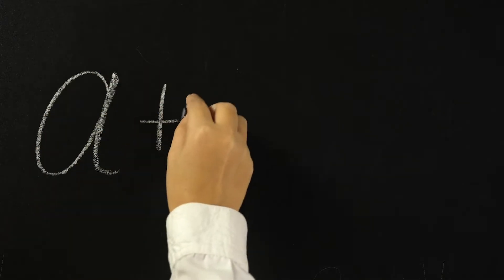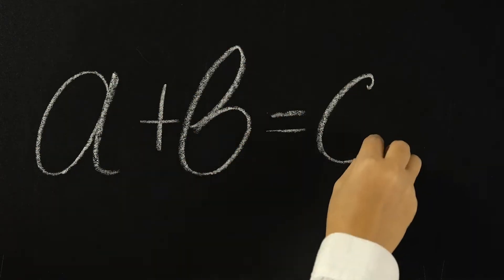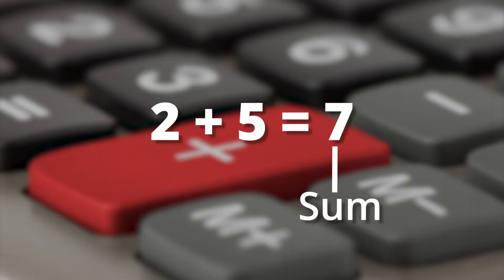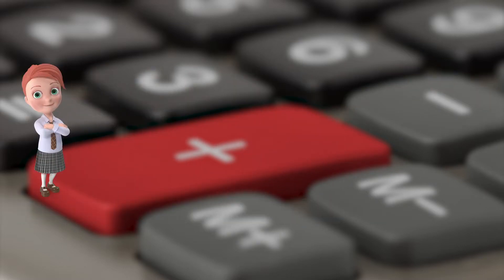Anytime you add two numbers together, the result is called the sum. For example, seven is the sum of two plus five. Six is the sum of five and one. Throughout your day, you add things together.